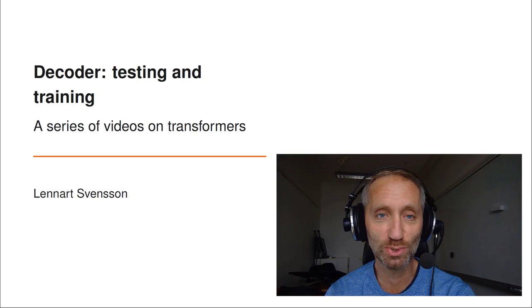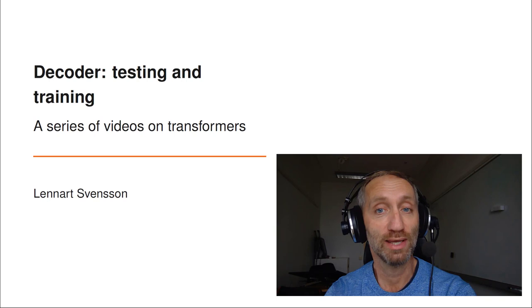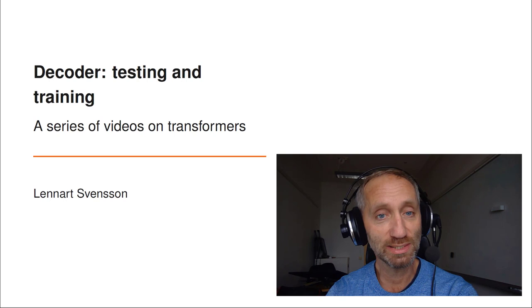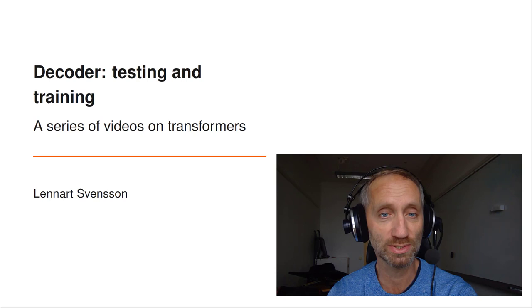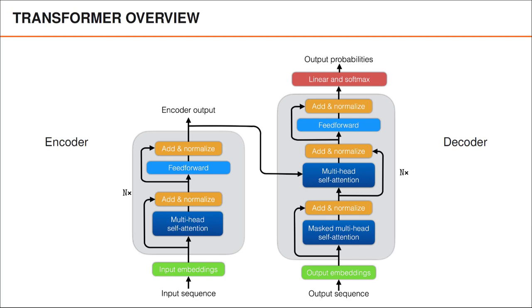Now that we've learned about self-attention and the transformer encoder, we are ready to look at the complete transformer architecture and study the transformer decoder. The material on the decoder is separated into three videos. In this video, which is the first of these three, we describe how the transformer decoder works during testing and training. The ideas explained here are then used in the next video to explain one of the main components in the decoder, where a mask is introduced to enable us to train the network more efficiently.